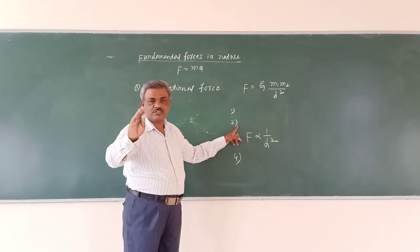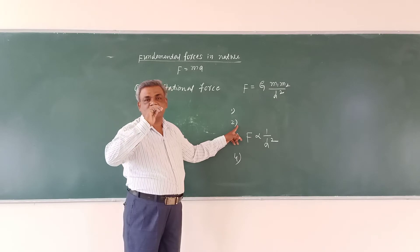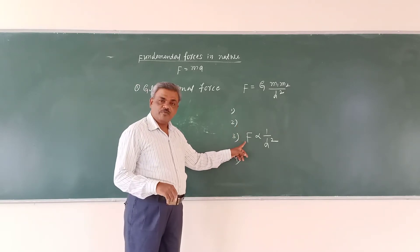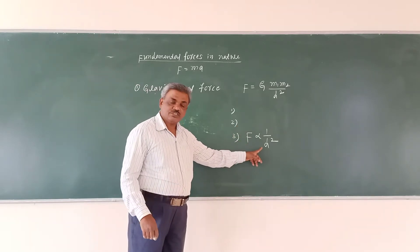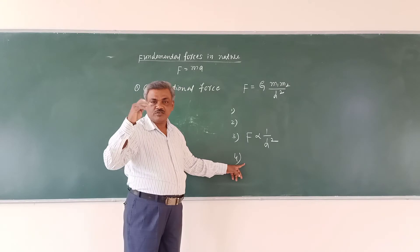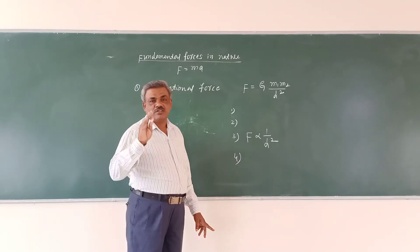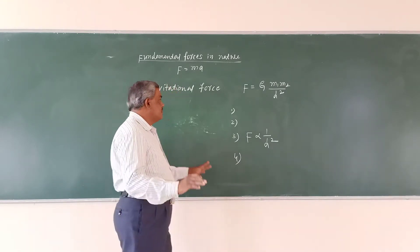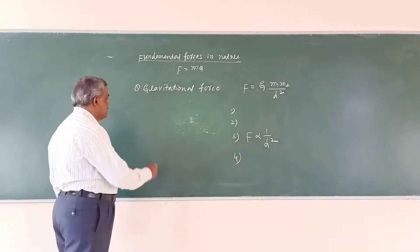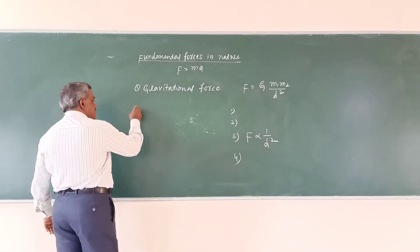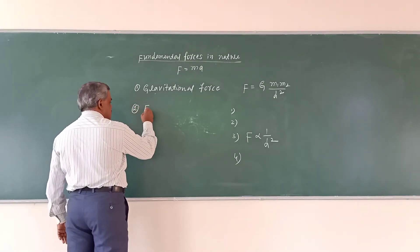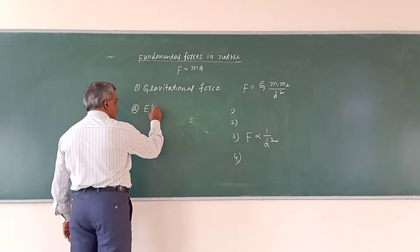Gravitational force is the weakest force among the fundamental forces in nature. It obeys the inverse square law. Gravitational force is a conservative force. This is the first fundamental force — gravitational force. The second one is electromagnetic force.